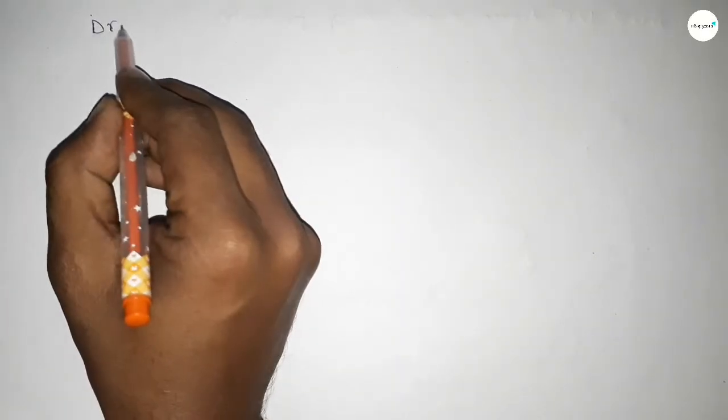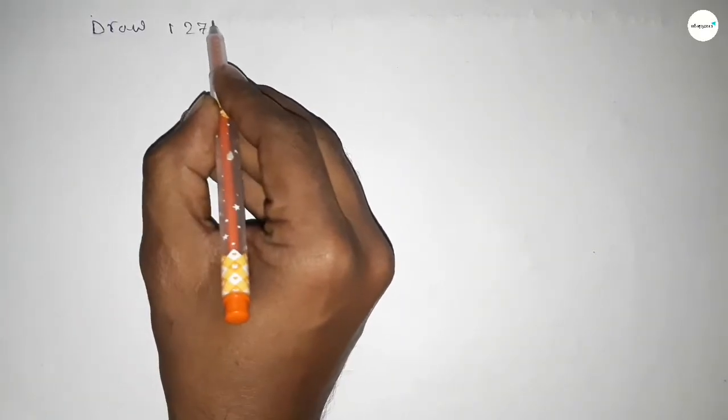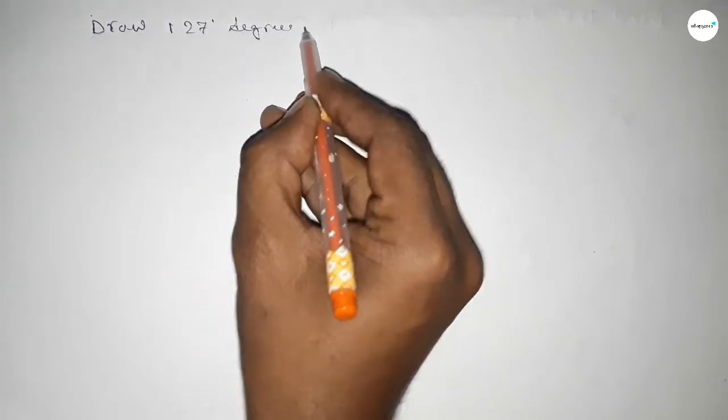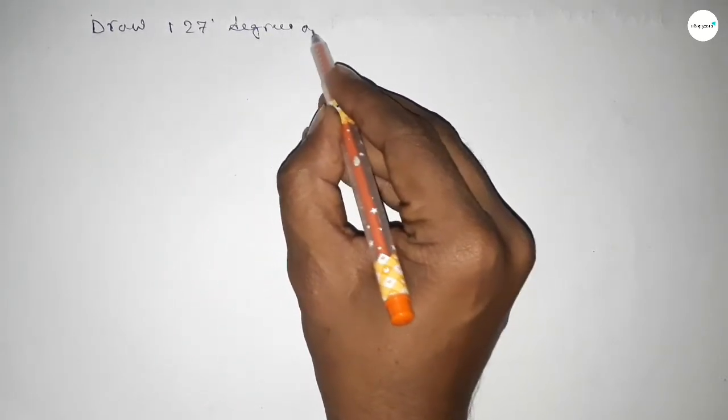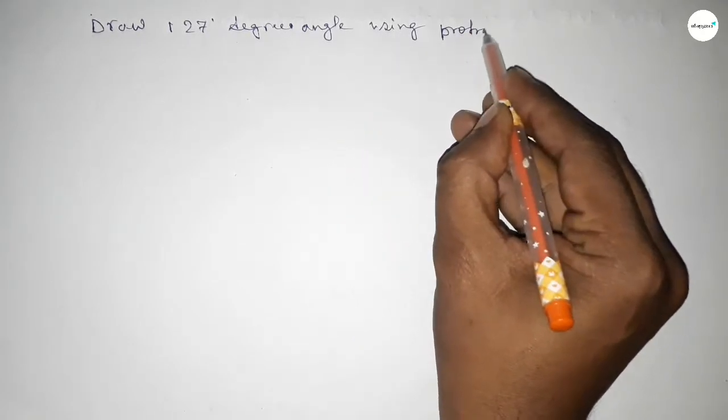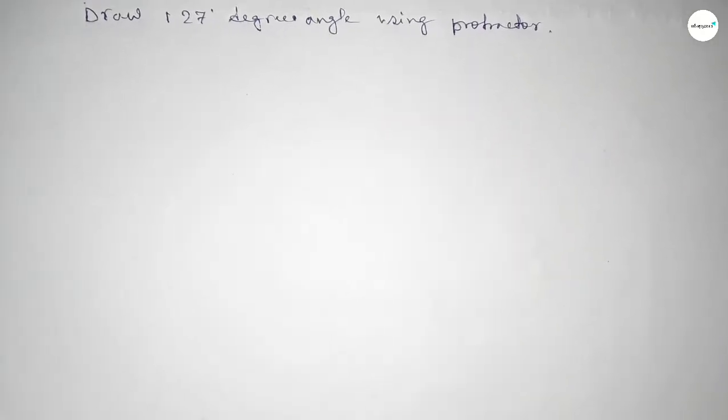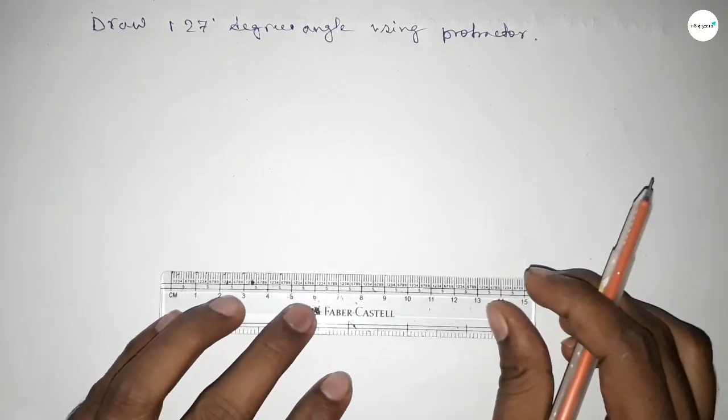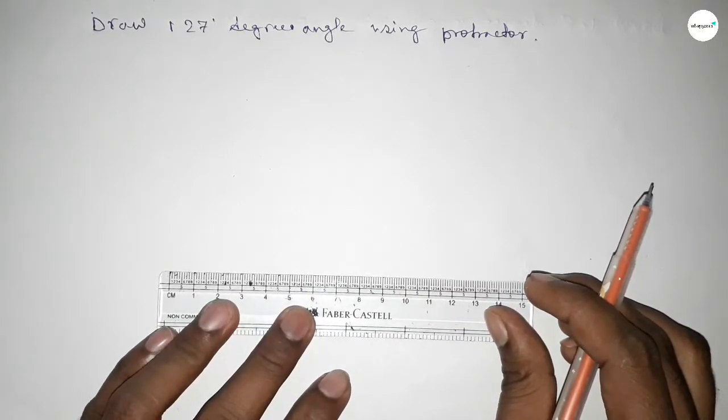Hi everyone, welcome to SI Share Classes. Today in this video we have to draw a 127-degree angle by using a protractor, so let's start the video. First of all, we have to draw here a straight line of any length, so first drawing here a line.